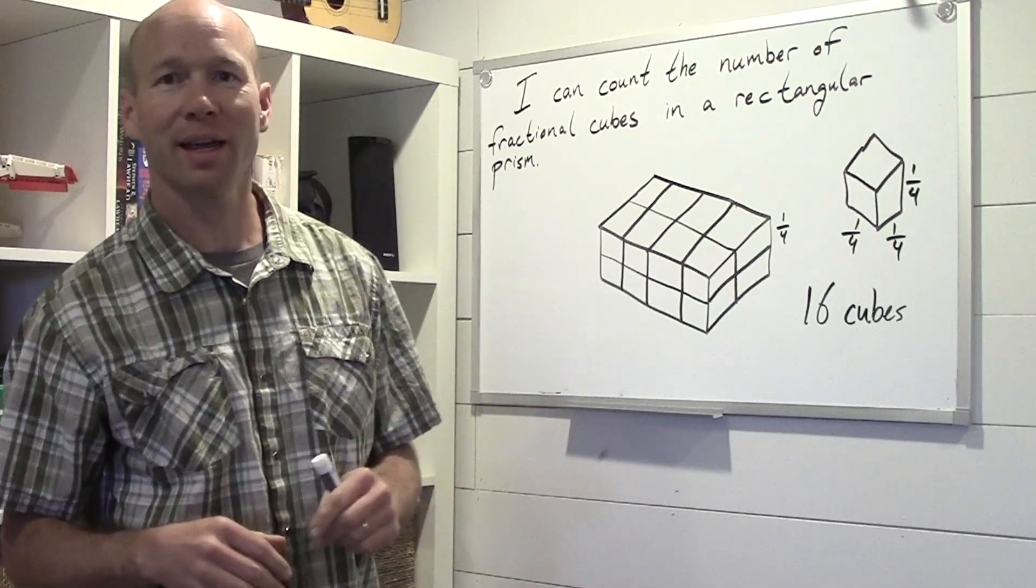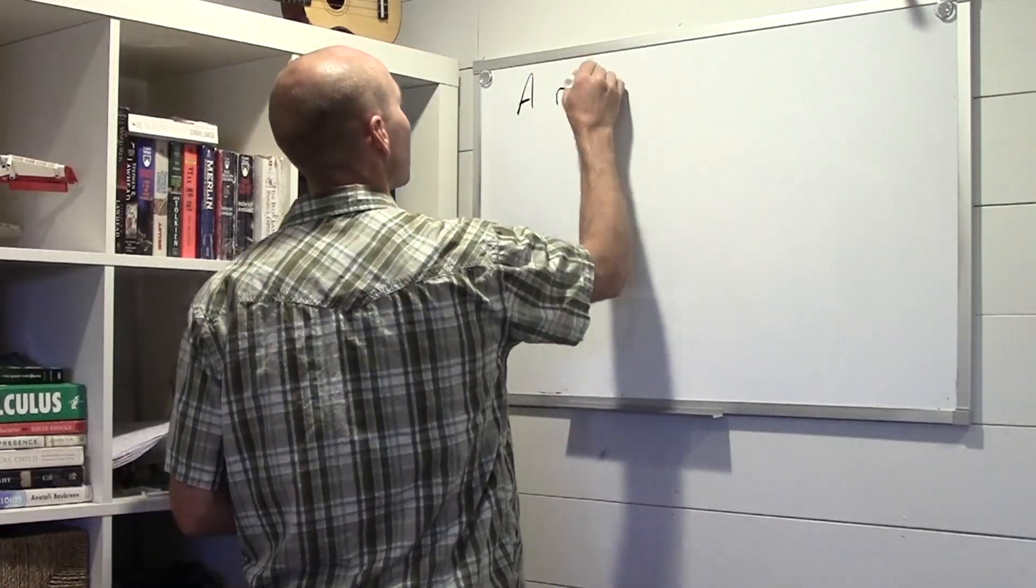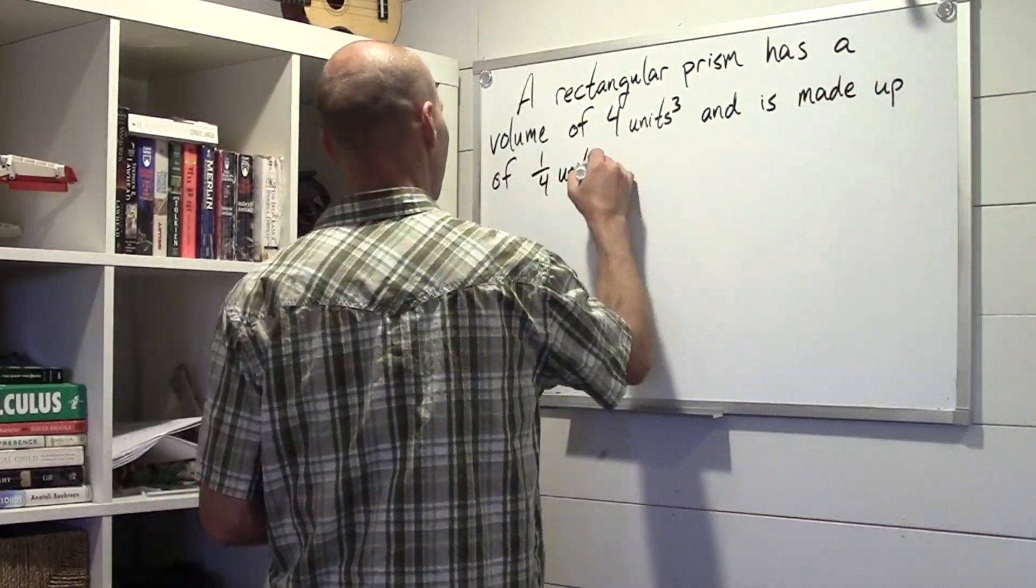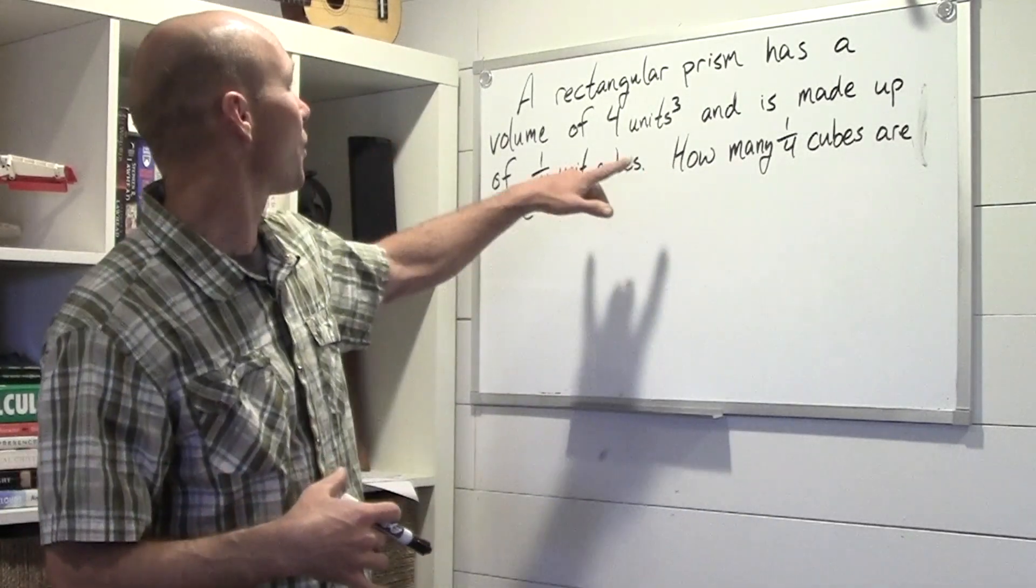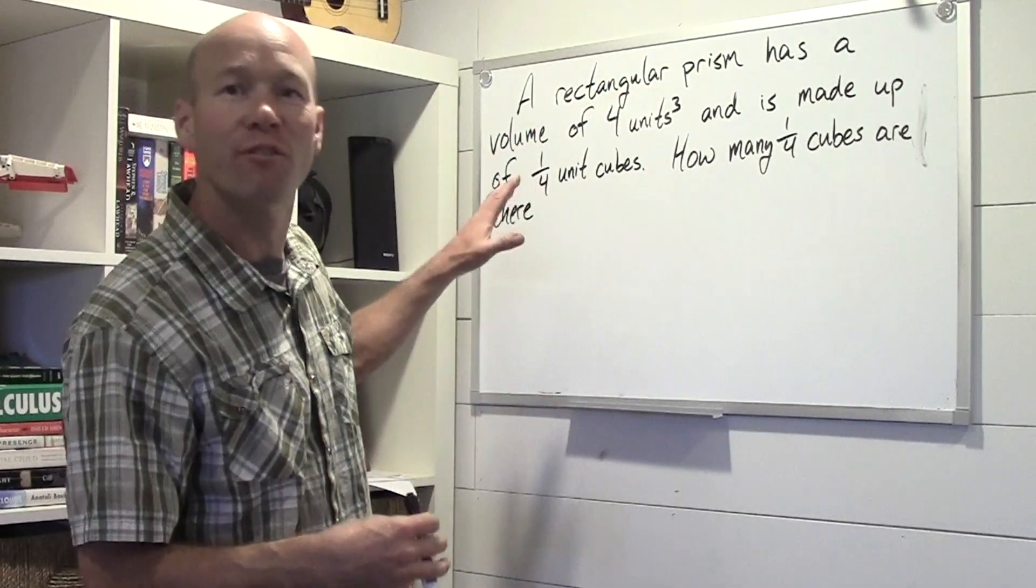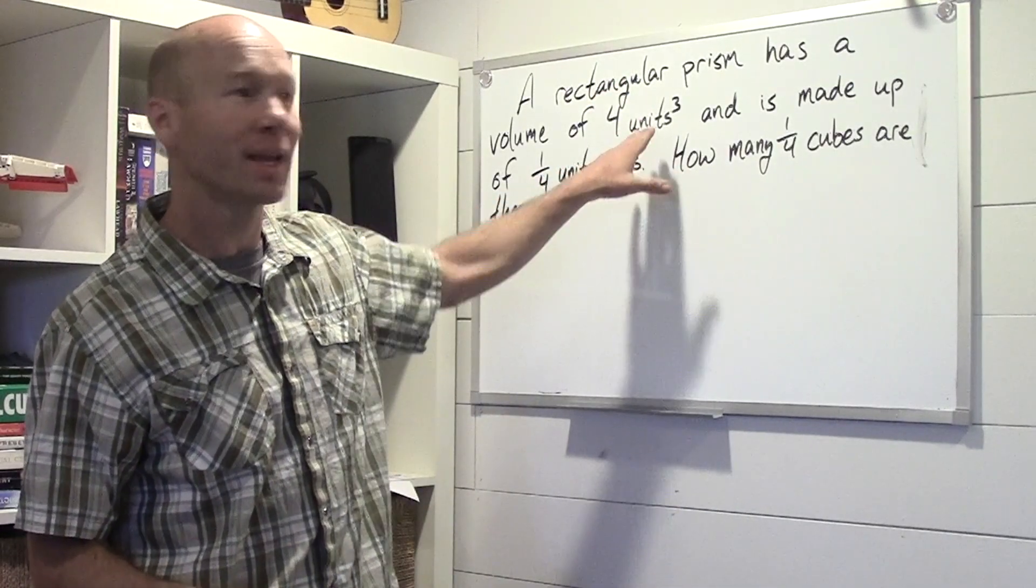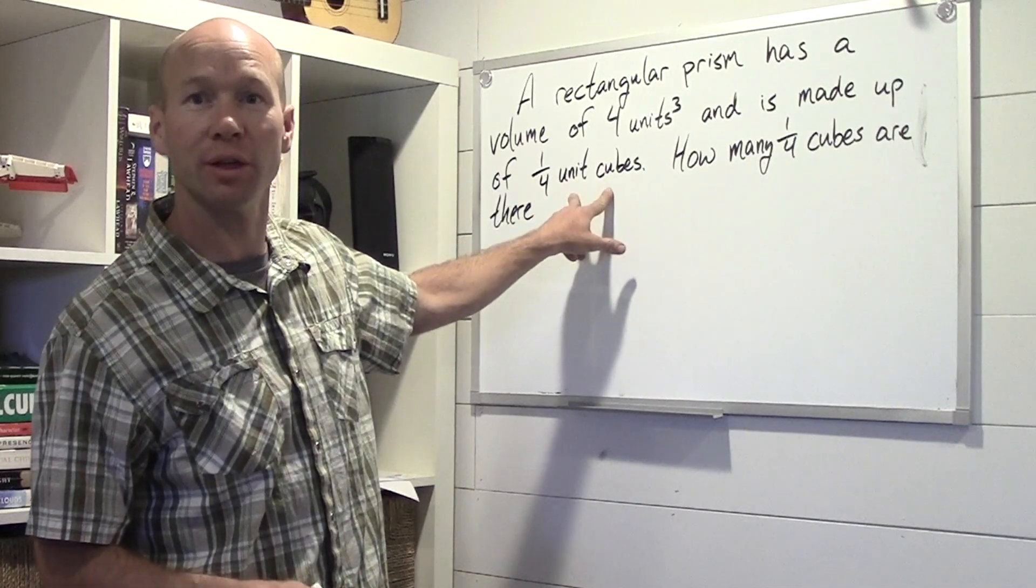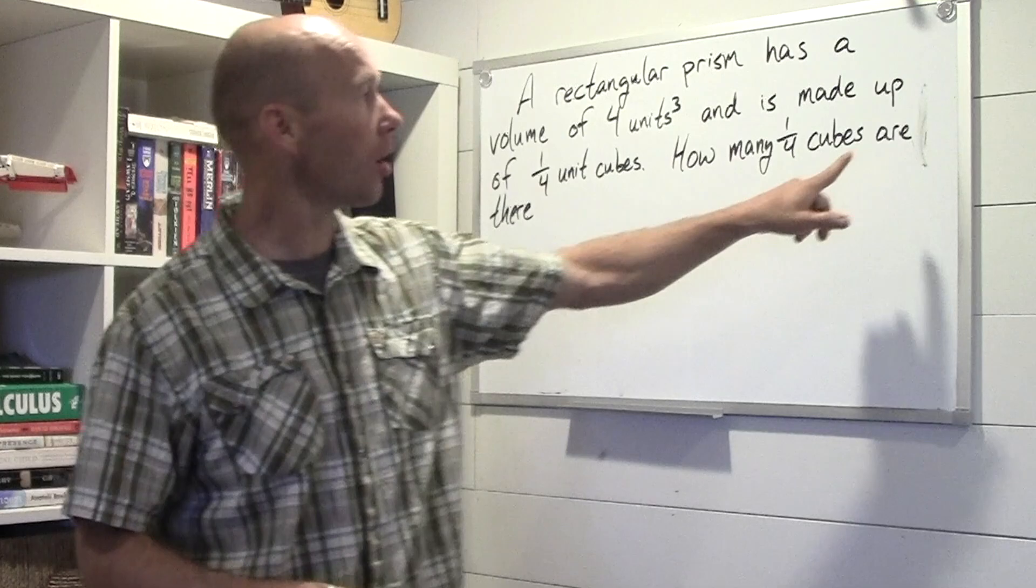Let's look at this a different way with a different kind of question. All right, so we have this question. A rectangular prism has a volume of 4 units cubed and is made up of 1/4th units cubed. How many 1/4th units cubed are there?